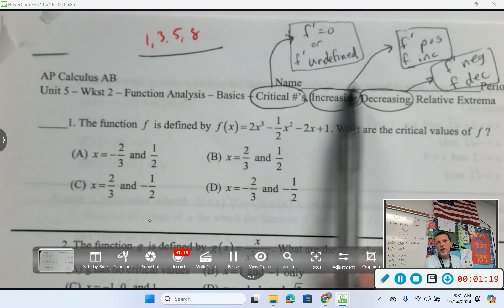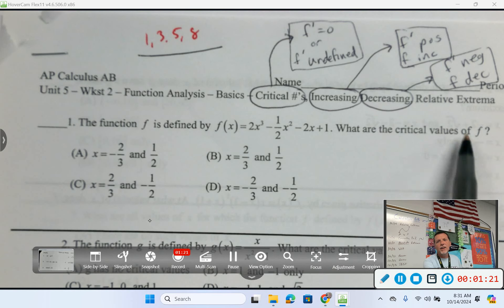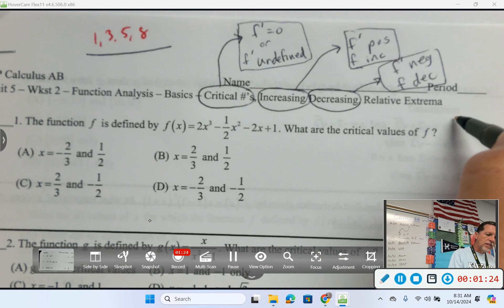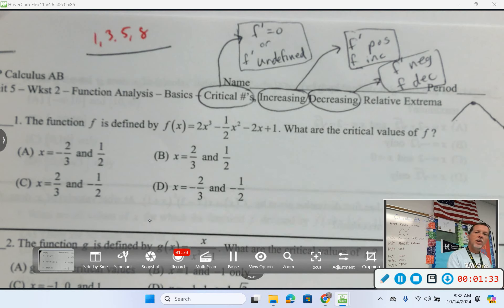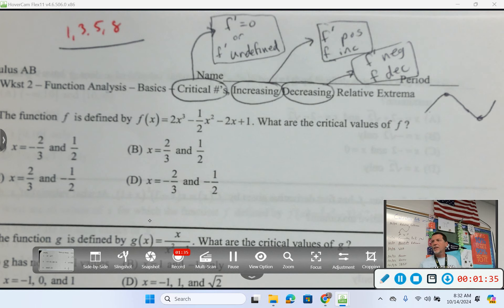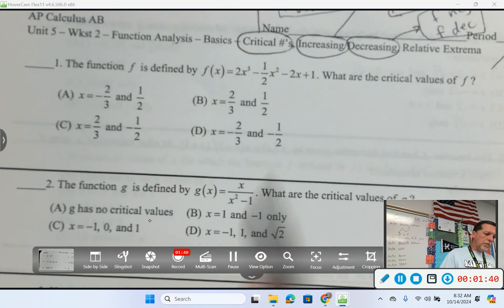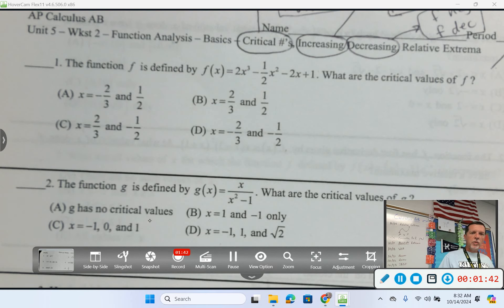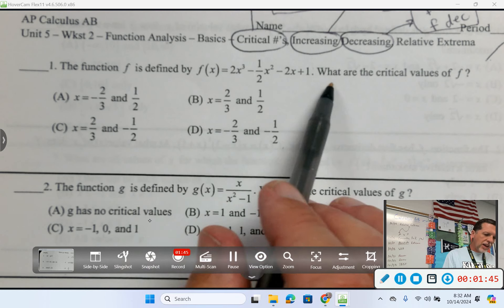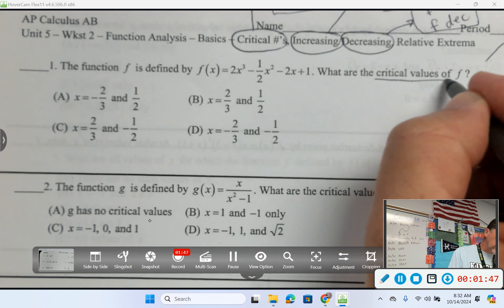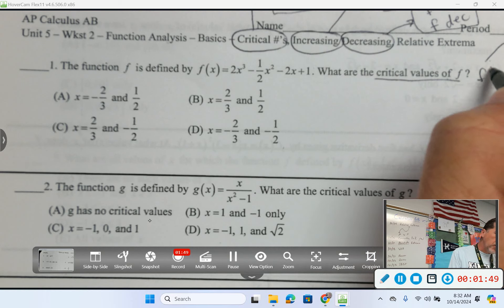Critical numbers increasing and decreasing. So let's do a few, to kind of refresh that. And relative extrema, not to give away the punchline for later today, but if you go from increasing to decreasing, you've got a max. And if you go from decreasing to increasing, you've got a min. That's the summary of today's lesson right there. All right, but let's back up and review some of this stuff. Number one, the function F is defined by this thing. What are the critical values?